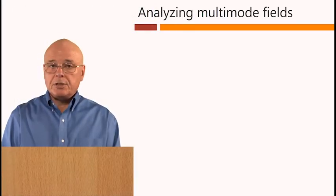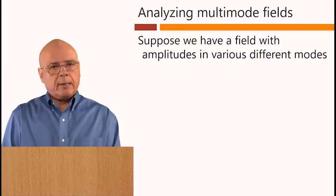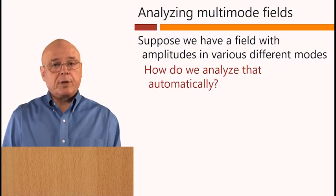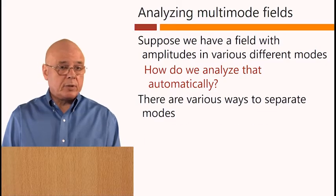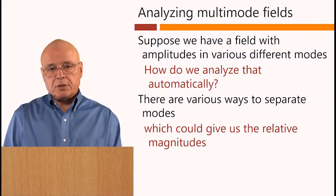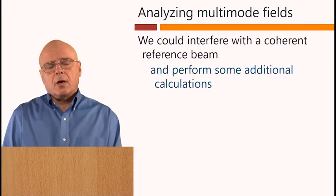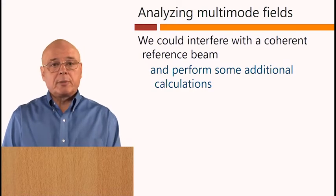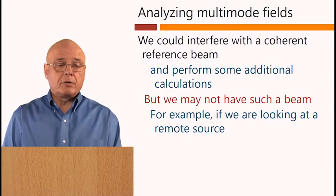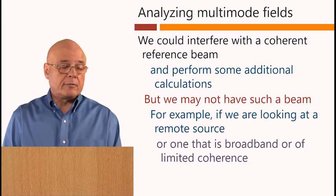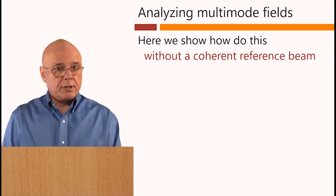Now let's look at another application, which is analyzing multi-mode fields. Suppose we have a field with amplitudes in various different modes. How do we analyze that automatically? There are various ways to separate modes, which could give us the relative magnitudes in the modes, but how would we get the relative phases? We could interfere with a coherent reference beam and perform some additional calculations, but we may not have such a beam. For example, if we're looking at a remote source or one that is of broadband or of limited coherence.